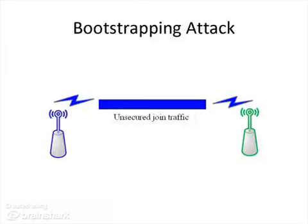Bootstrapping is what happens when a node joins a network. This type of attack isn't really a specific cryptographic attack, but more of a management problem. As an example, consider a wireless remote control where you want to tell your DVD player to listen to that remote. You might press a button on each device to initiate a join method. As these are quite low-power devices, you might just use an unsecured join message, transmitting in clear text whatever security or encryption data you need — the idea being that it's extremely unlikely an attacker will be listening at that exact instant. In this scenario, the network starts up fine with no attacker present, and the devices begin communicating with encrypted traffic.